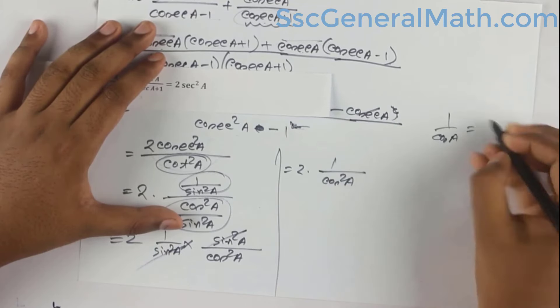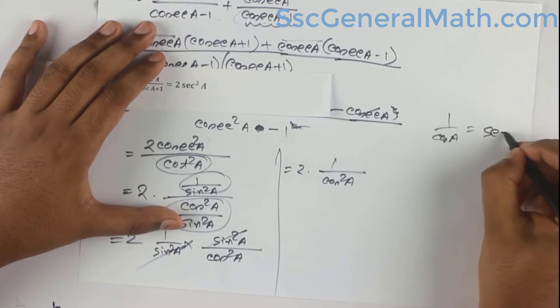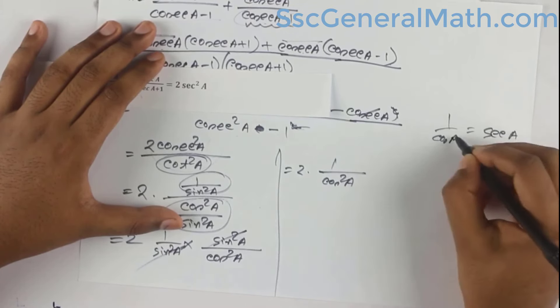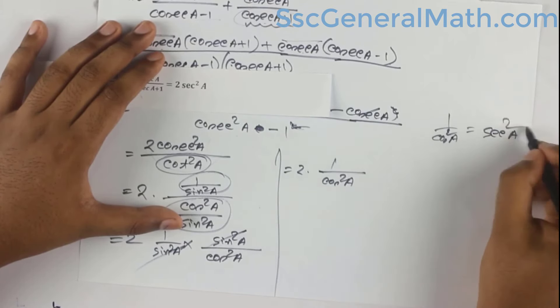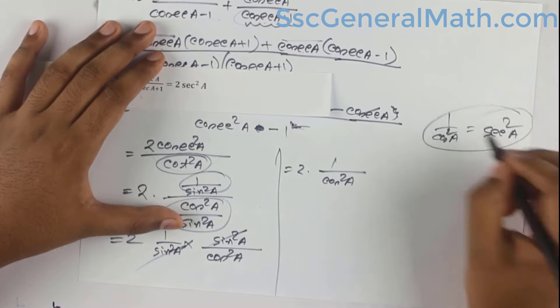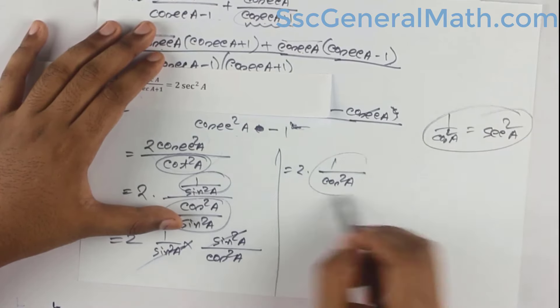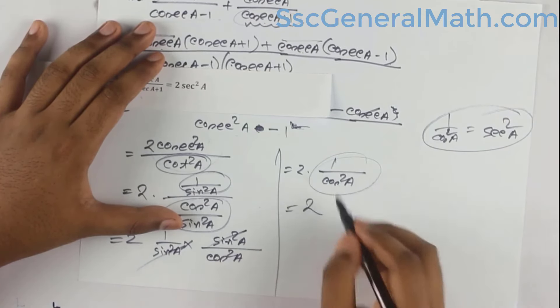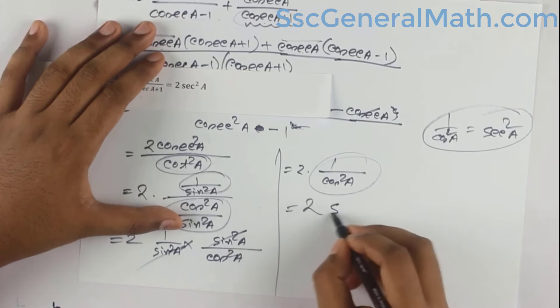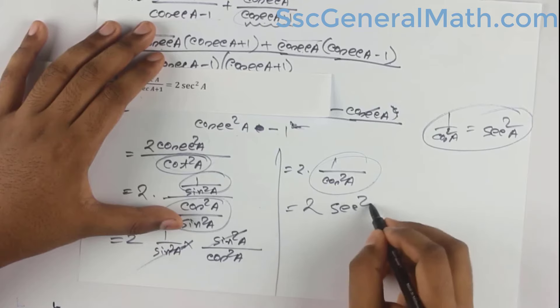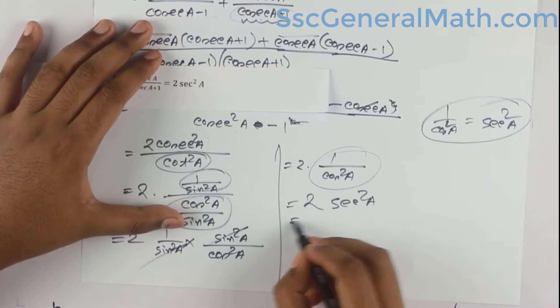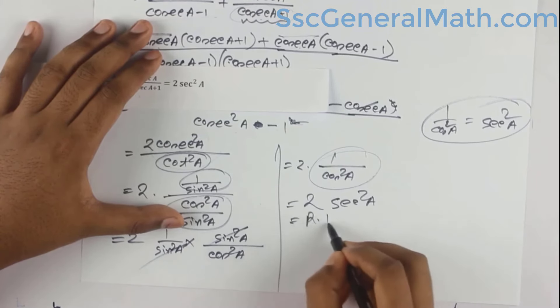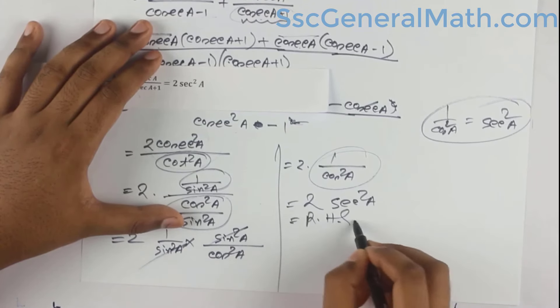This simplifies to sec squared a. So 1 by cos squared a is equal to sec squared a, which equals the right hand side. Hence proved: cosec(a)/(cosec(a)-1) + cosec(a)/(cosec(a)+1) = 2 sec squared a.